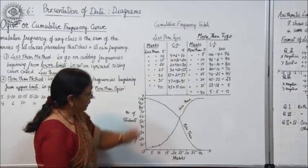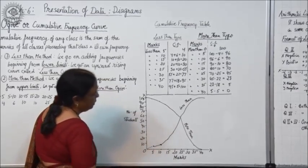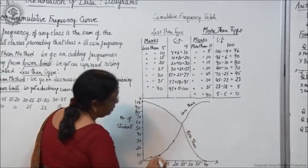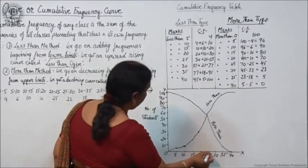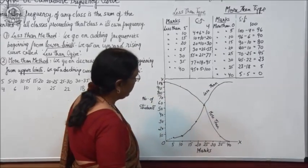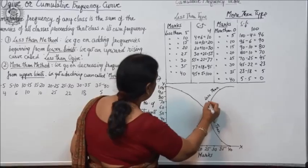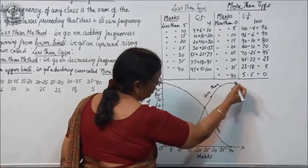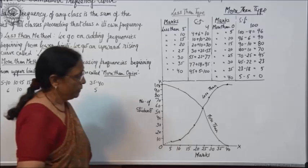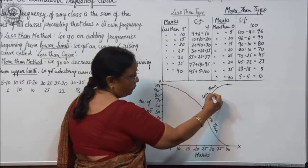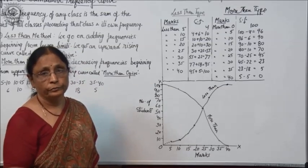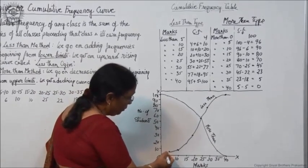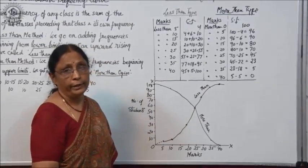Less than 10, cumulative frequency is 10, so second point is at 10 and 10. Then less than 20, they are 30 — point at 20 and 30. Then less than 25, they are 55 — point at 25 and 55. Then 77 for the next one. Then 95, and then the last one is 100, at 40 and 100. When we join the points with a freehand curve, this curve gives you the less than ogive, and the lower end joins the axis with a dotted line.